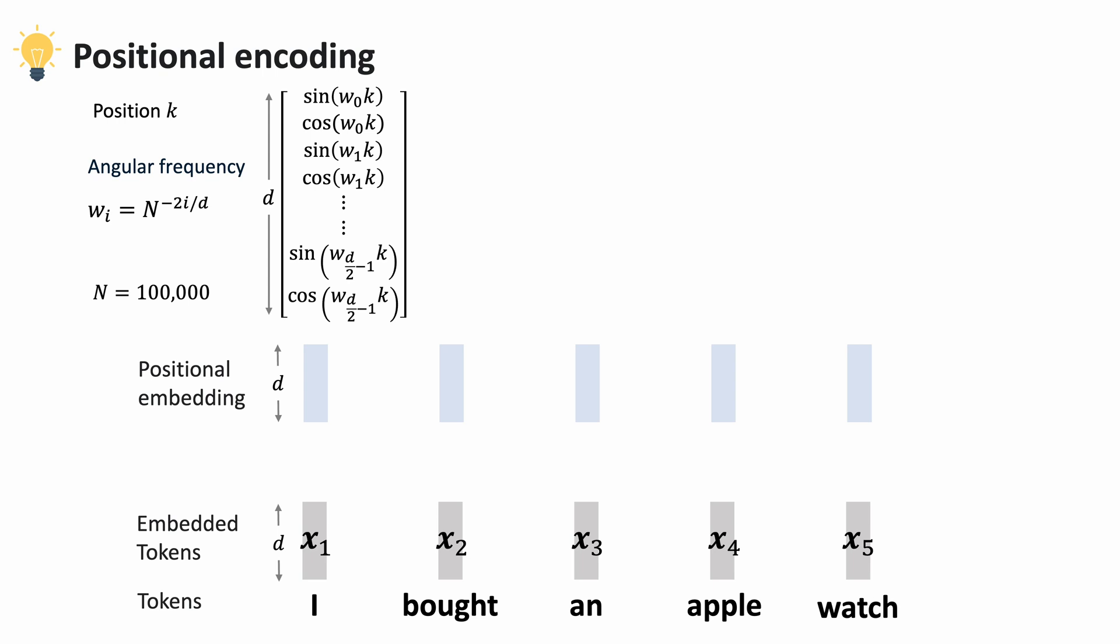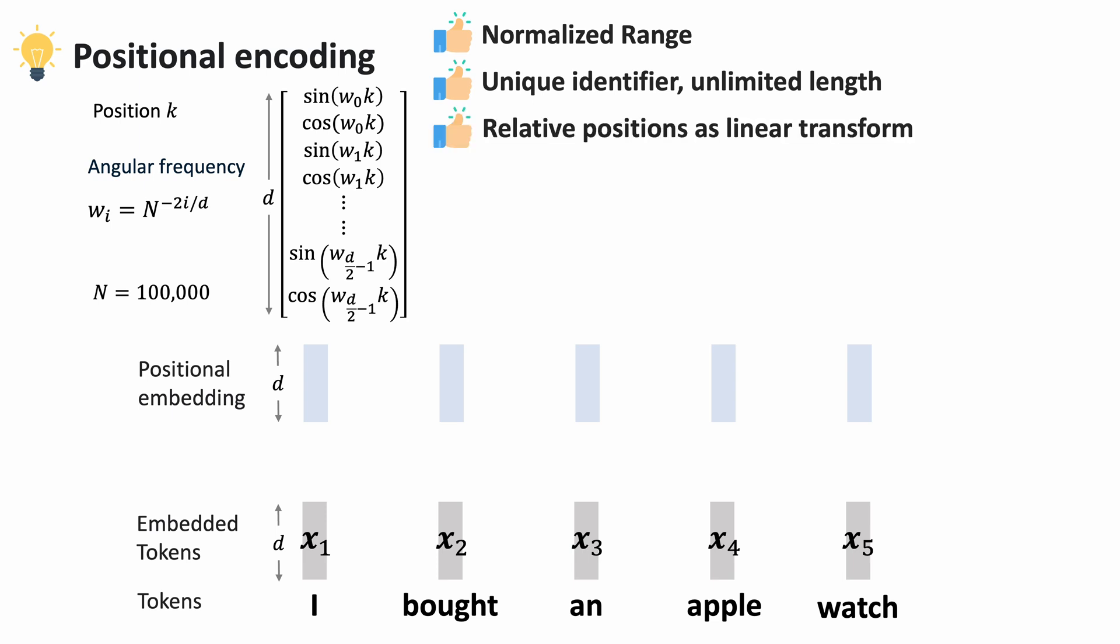The sinusoidal Positional Encoding has a number of advantages. First, it has a normalized range between minus 1 to 1. Second, it has a unique identifier for each position, even for positions larger than the one used in training. Third, for any pair of relative positions, we can find a linear transformation between them.